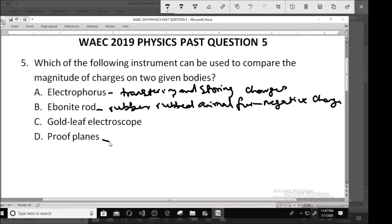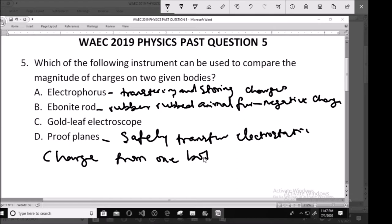Whereas proof planes are devices that can be used to safely transfer electrostatic charge. If you want to safely transfer electrostatic charge from one body to another, you use proof planes.